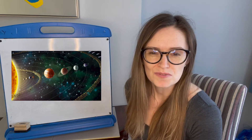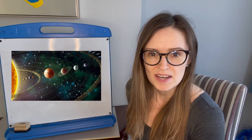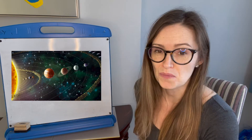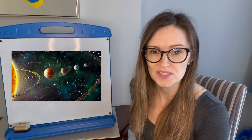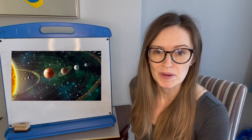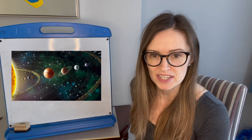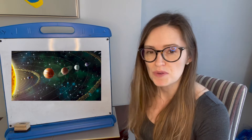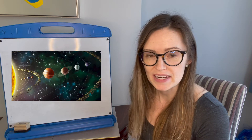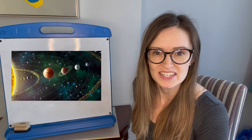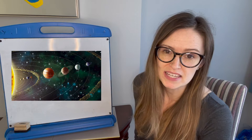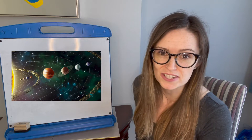Have you ever wondered what the planets look like close up? We're going to have a go today at creating planets using food colouring and bicarbonate of soda. Then we're going to make our planets bubble and fizz away when we add vinegar, and it's going to make a chemical reaction.